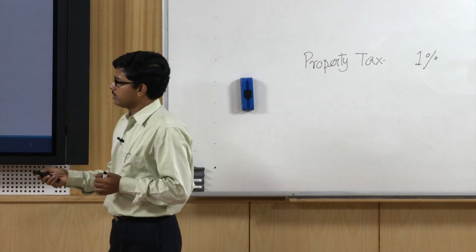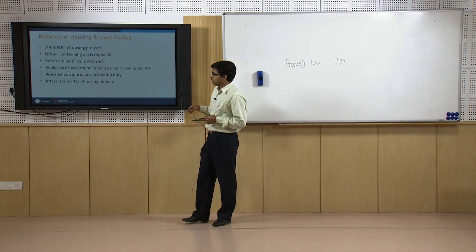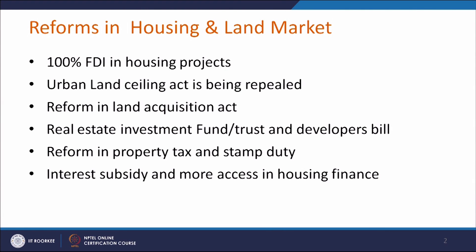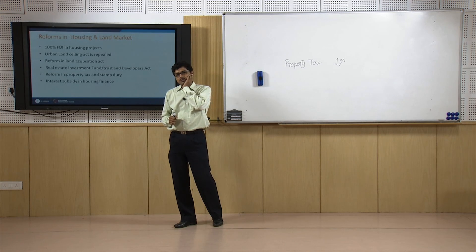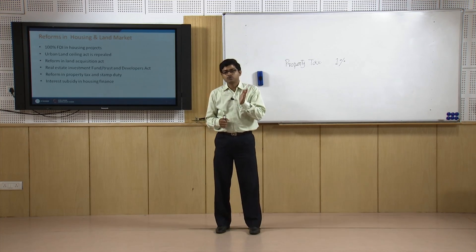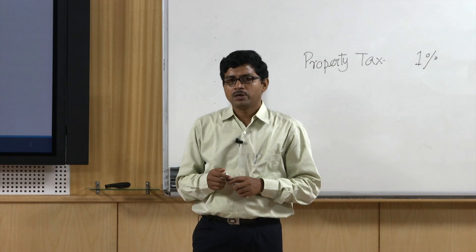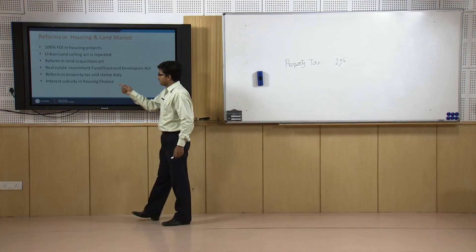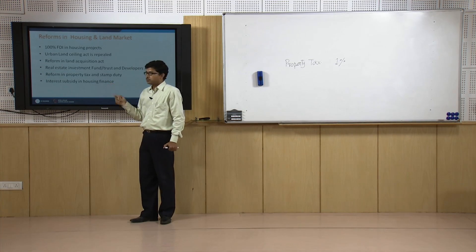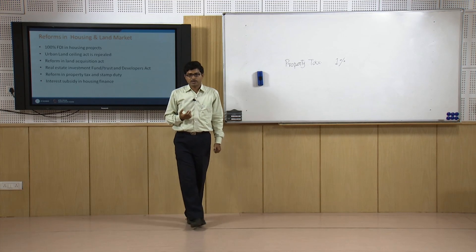Another reform, already mentioned, is interest subsidy in housing finance. For common people, interest subsidy of up to 5 to 6 percent will be given by the government, whereas the remaining 2 to 4 percent can be afforded by the common people for their housing finance. This will basically enable a common man or a group of people to buy a house from the market, increasing their affordability. This is basically a demand-side intervention — it creates more demand from the people.